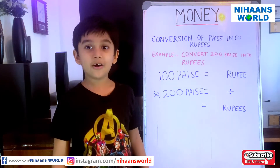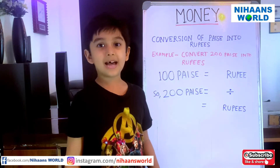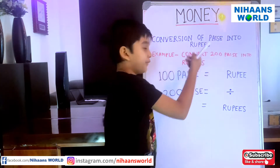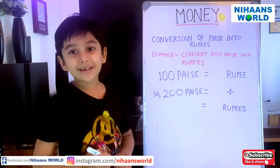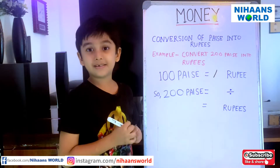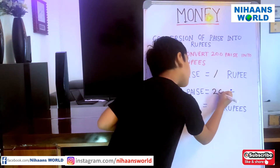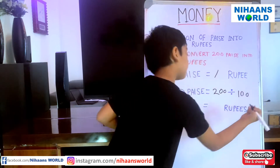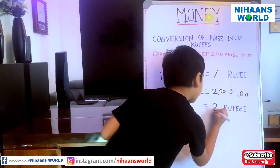Friends, now let us learn conversion of paise into rupees. Let us do the example: convert 200 paise into rupees. Since 100 paise is equal to 1 rupee, we write 1 here. So, 200 paise is equal to 200 divided by 100. We got the answer 2, so we write 2 here.